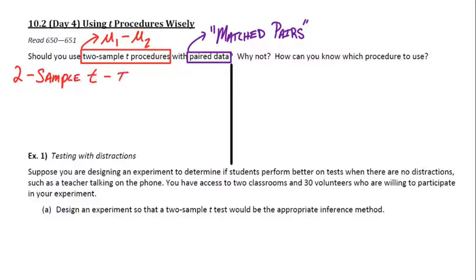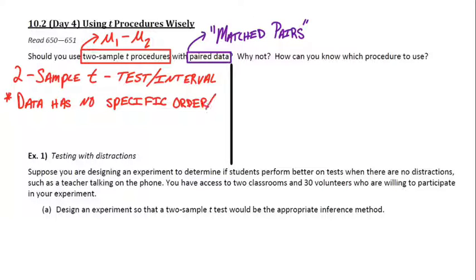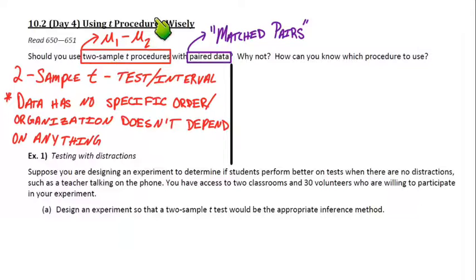Well, for starters, the two sample T tests or two sample T interval, you use that when the data has no specific order or organization. So if it's just one big group of data for the first group and then one big group of data for the second group,